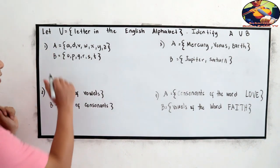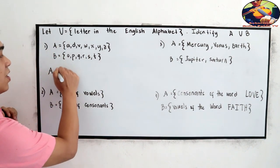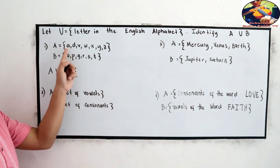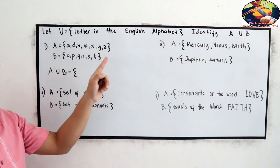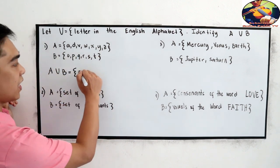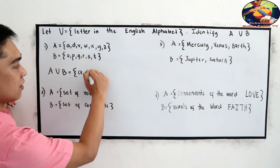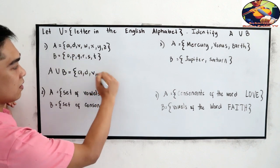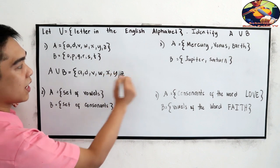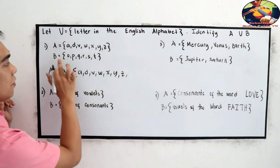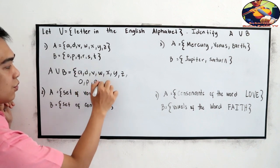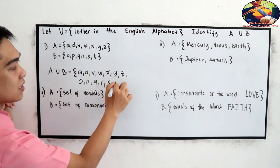Number 1, A union B is equal to... Just copy all the elements in A and B, and combine. So, we have A, D, V, W, X, Y, Z for A. Then for B, O, P, Q, R, S, T.